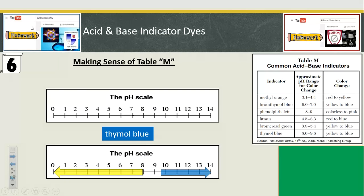Acids and base indicator dyes are very easy to understand and utilize if you know how to work with Table M and what the approximate pH range for color change relates to that color change mentioned. So, below the number is the left-hand color.